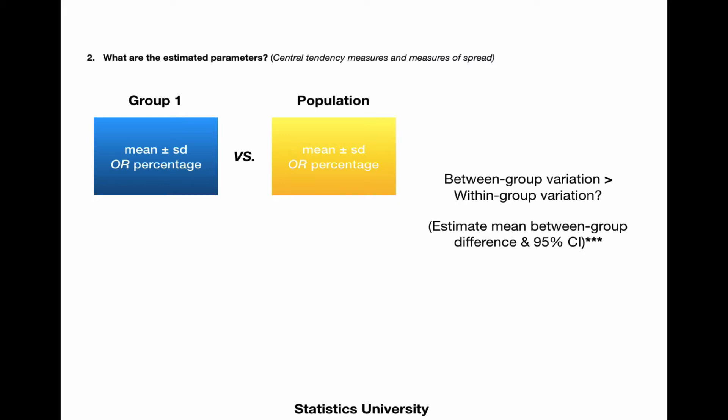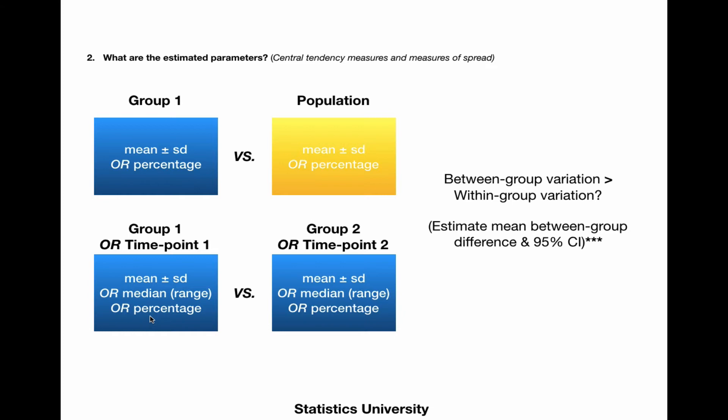We're going to estimate the difference, a parameter between those two groups. The upper row in the former image would be where we compare the mean plus-minus standard deviation, or a median, from a group of patients that we have followed and included in our analysis, and we're going to compare it with the population, and we can do the same for a percentage.